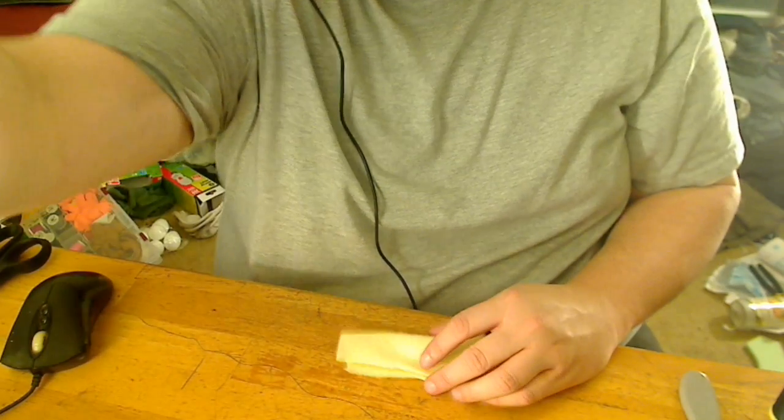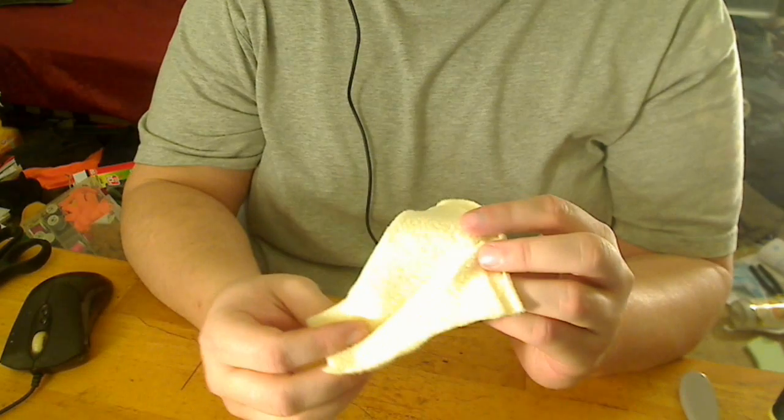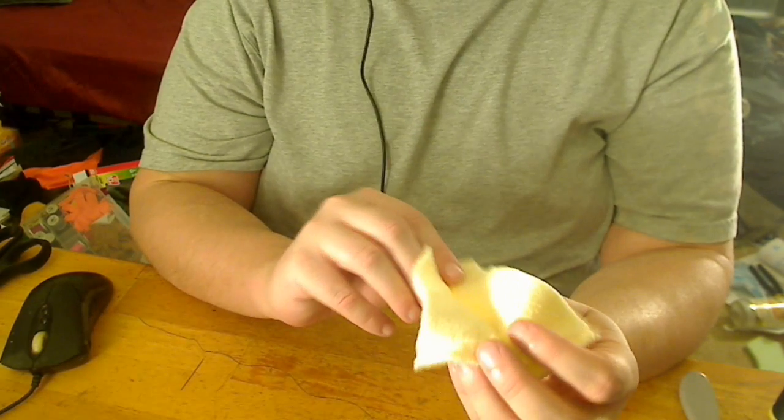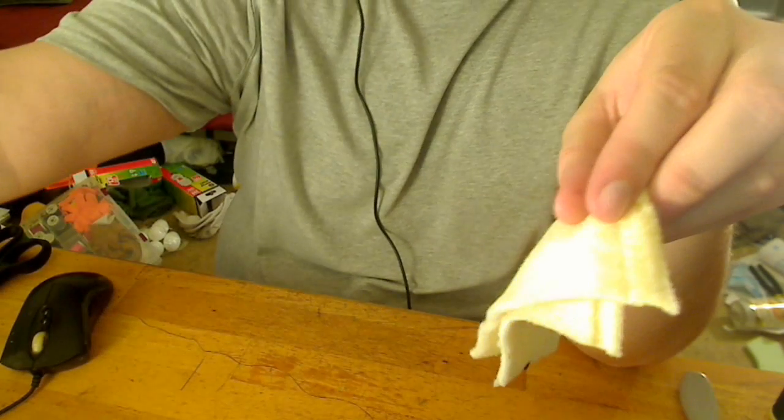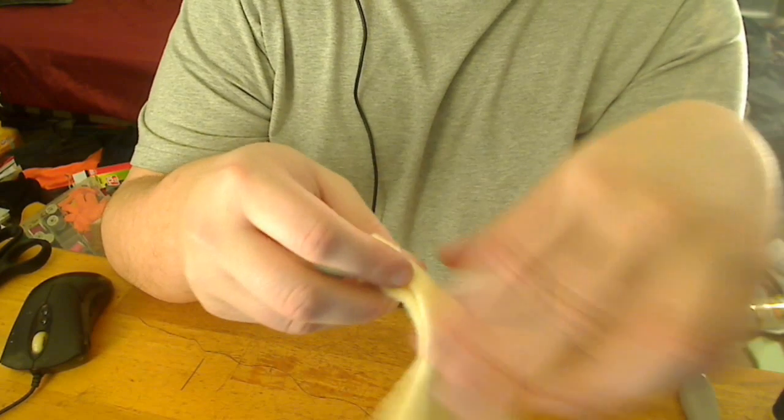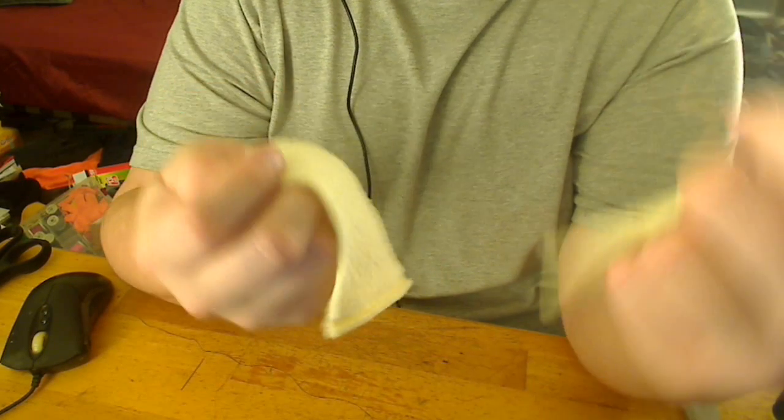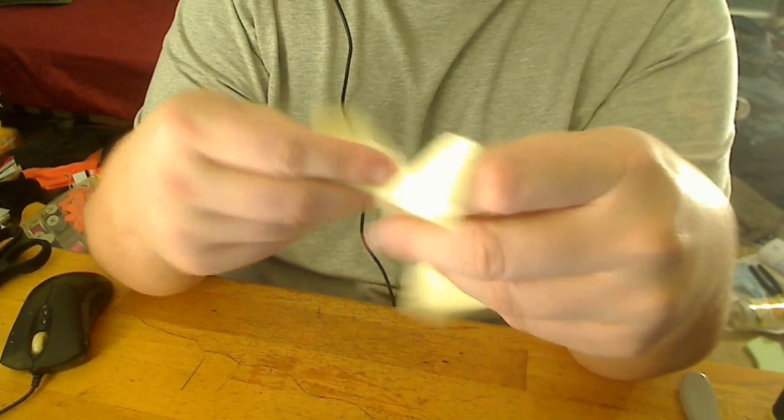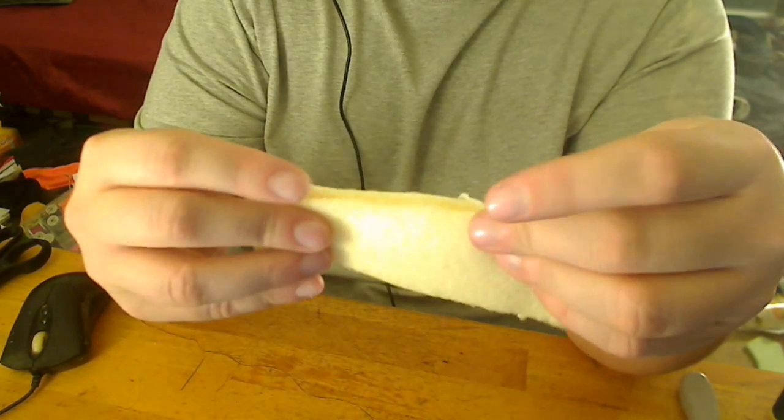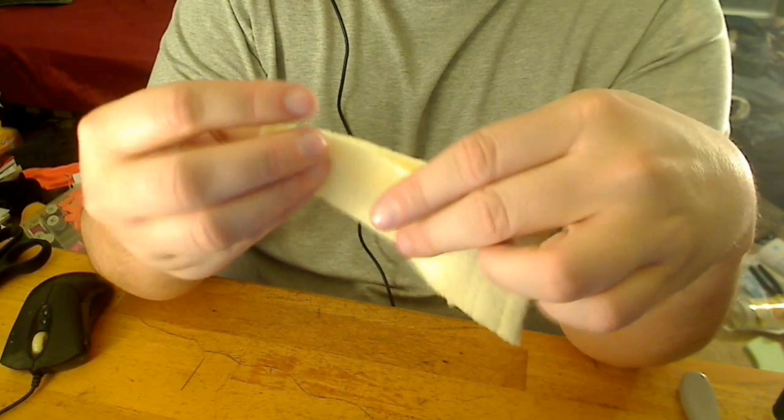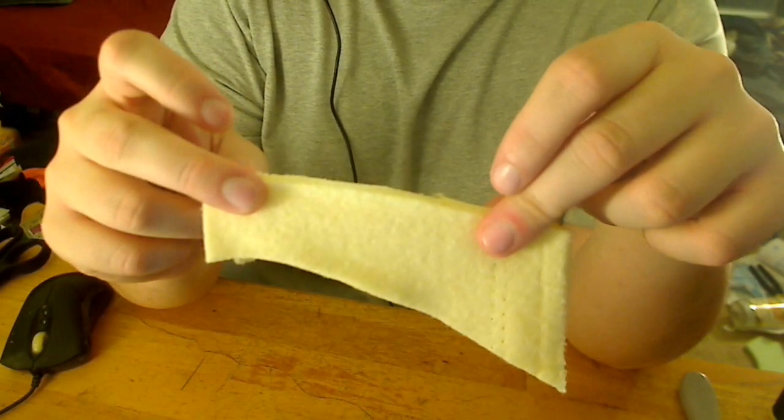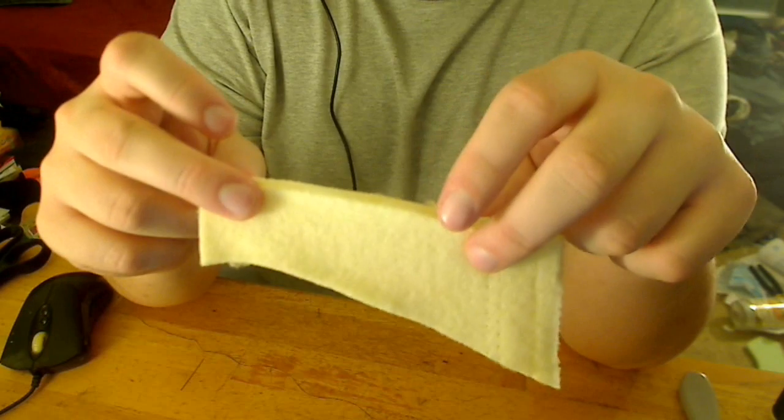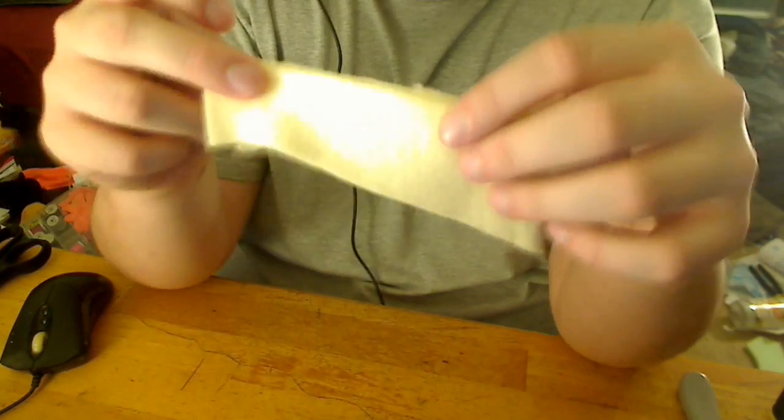Alright, now what I've got here is some fleece, and this is anti-pill fleece. The lighting is kind of throwing it off there. But you can see that we've got a fuzzy side and a smooth side. And so what I do is I line my seam up, fuzzy side in. So whatever side you want on the outside, we'll start with it inside. You can do this without doing it reversed. It's just easier if you do it this way.